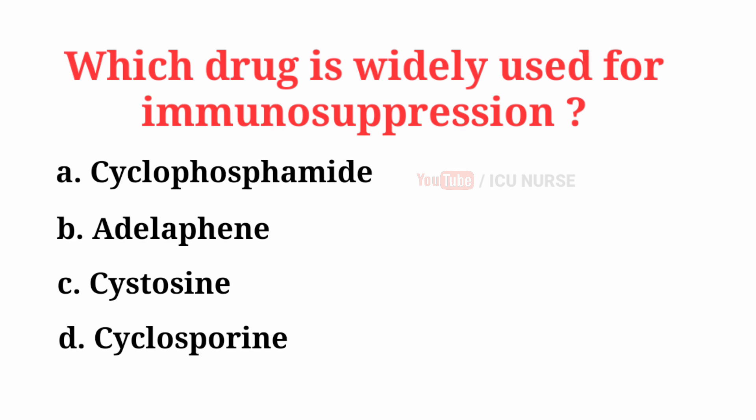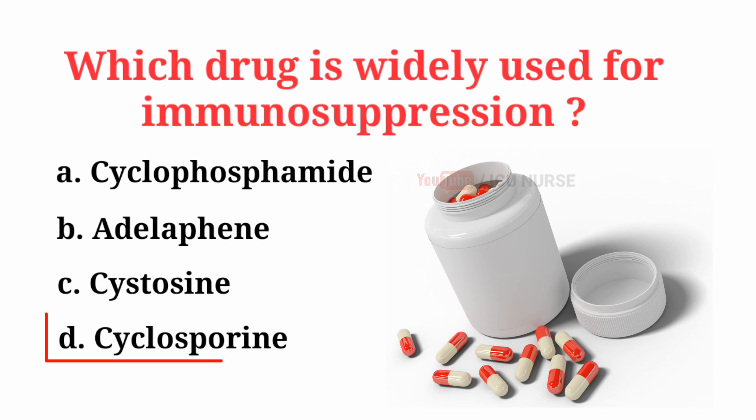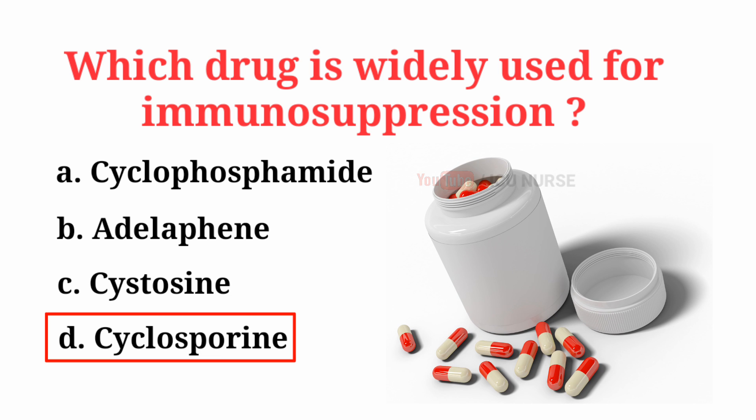Which drug is widely used for immunosuppression? The correct answer is D, Cyclosporin.